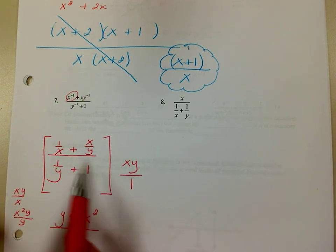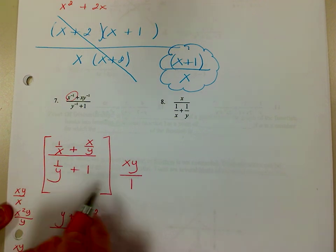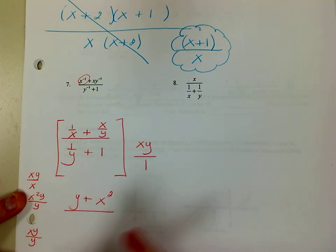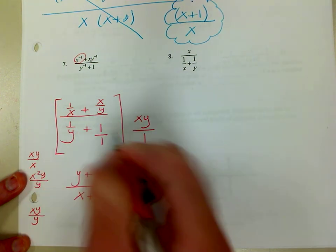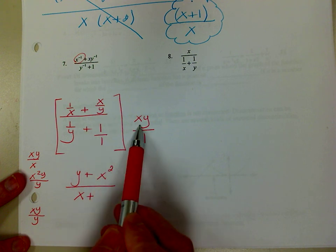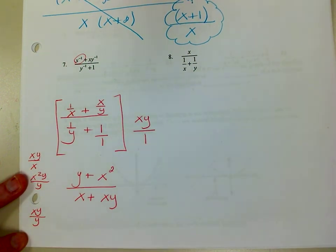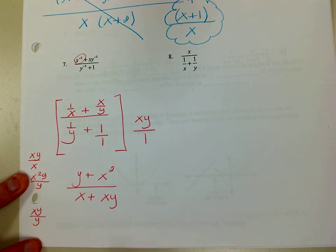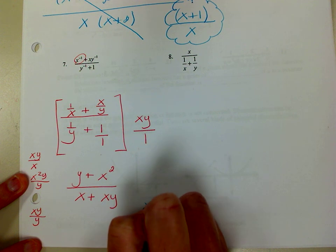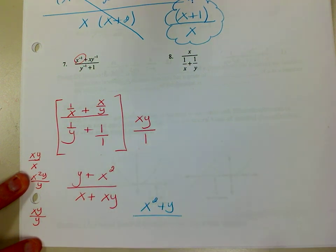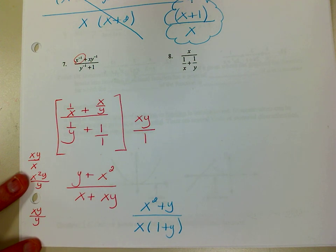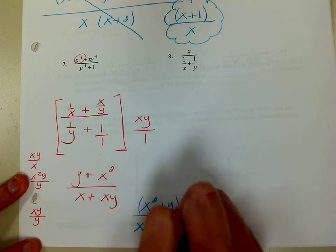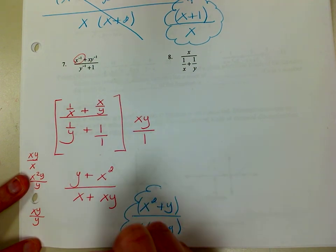Now down in the denominator: 1 over y times xy — the y's cancel, leaving x. Then 1 times xy is just xy. After multiplying by the common denominator, factor if possible. The only thing you can do is factor out an x in the denominator, giving x times the quantity 1 plus y. The numerator stays as y plus x squared. Nothing cancels out, because there's an addition sign between the terms — that whole thing is grouped together. So this is your final answer.